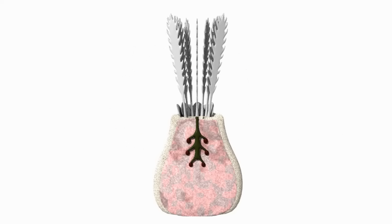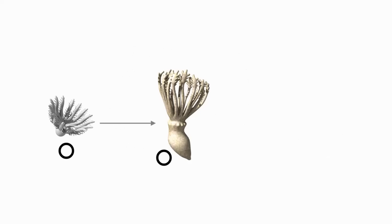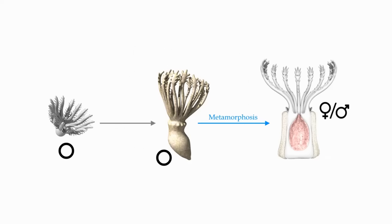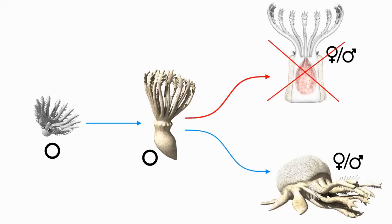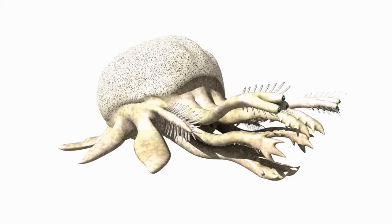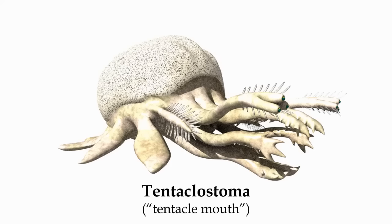And one final note on reproduction: most anthostomes only develop a reproductive system during their metamorphosis into adults, meaning that before they mature, the larvae are neither male nor female, completely lacking any sexual characteristics. Then, once they metamorphose, they become either male or female, perhaps based on certain environmental cues such as temperature or the availability of certain nutrients, rather like the developing embryos of crocodilians. But since these neotenous anthostomes never undergo metamorphosis, they will instead gradually develop a reproductive system once they reach maturity, with the same delayed onset sex determination as the other anthostomes. With this suite of bizarre traits, I'm going to dub these bilateral gastrozoans tentaclostomes.